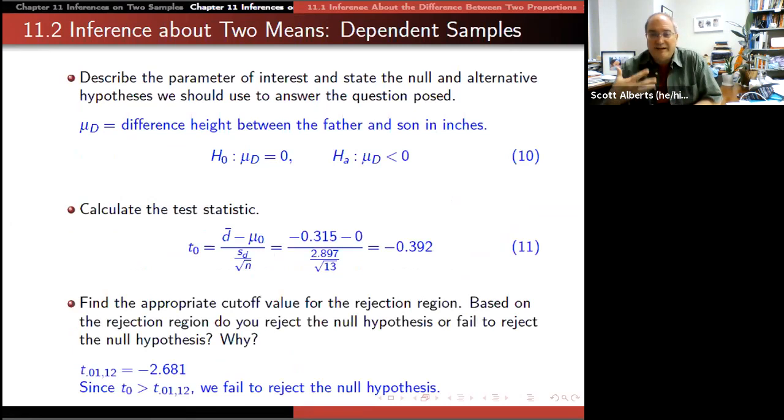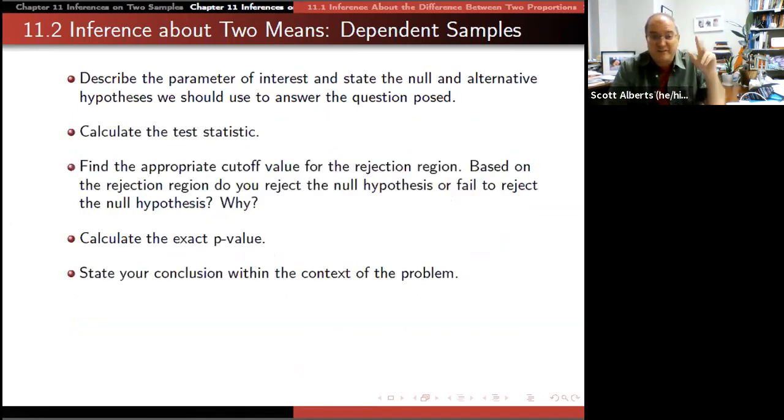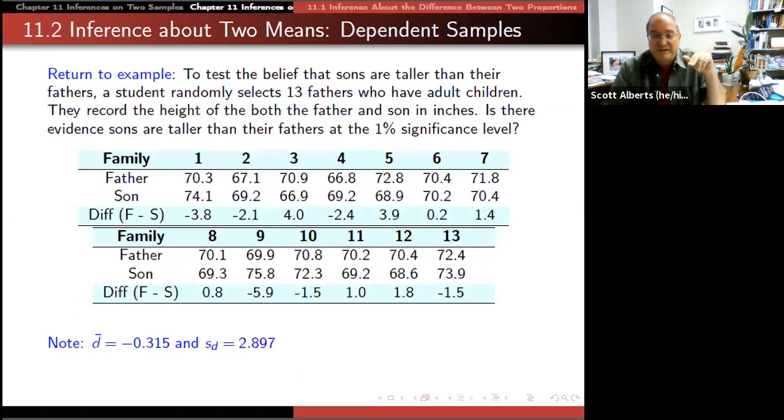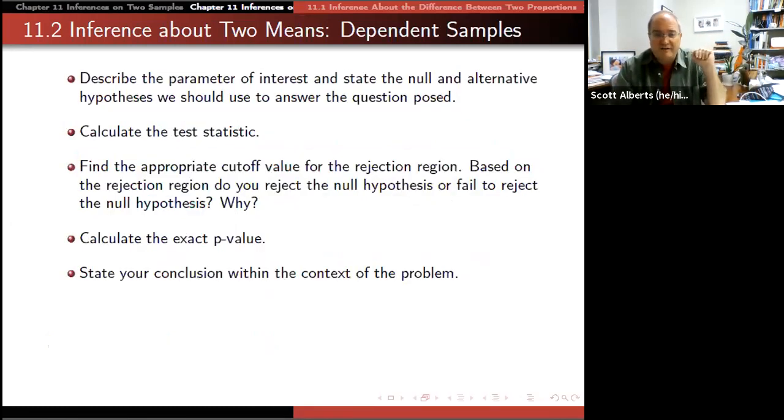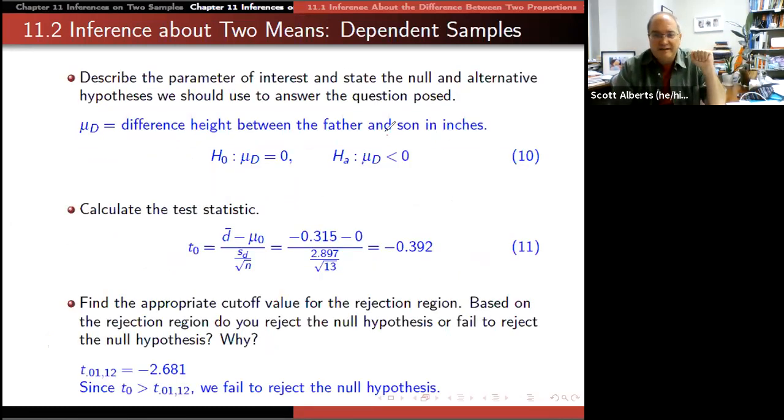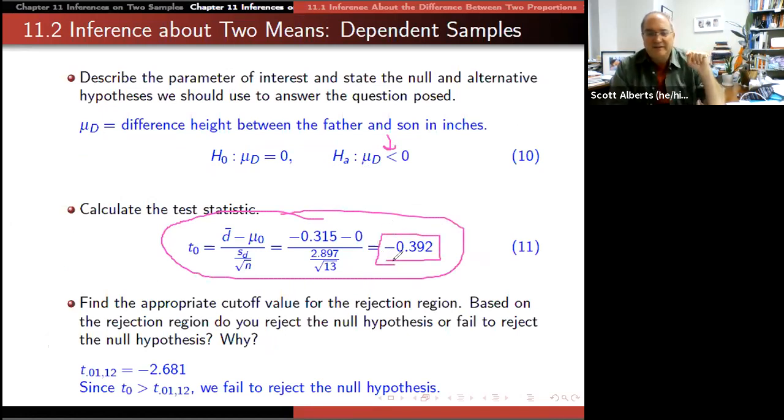Then we're going to go ahead and calculate. First, we're going to describe the parameter. So the mean is the difference between the heights. The null hypothesis is that there's no difference, null. And the alternate hypothesis, the one we're interested in, is that the mean is less than zero. Less than zero just because of the way she subtracted it. We could have subtracted son from father. You can subtract either direction. But because we believe the sons are taller than the fathers, it's going to be a less than sign. Then we're going to calculate the value. Certainly the raw value is less than zero, so negative 0.39 is our value.